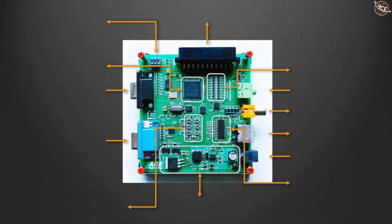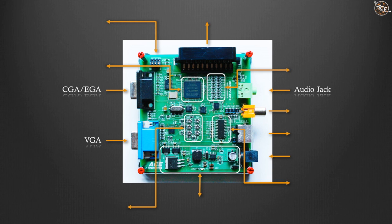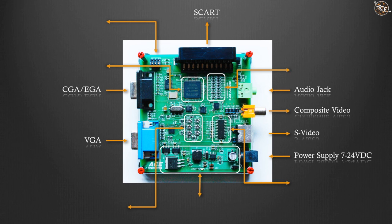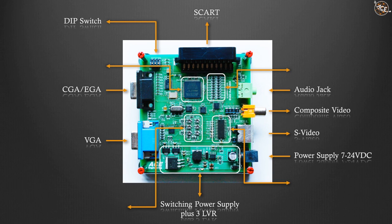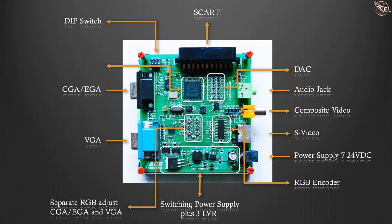CV2TV has a CGA/EGA connector input, VGA connector input, audio connector input, SCART connector output, composite video output, S-Video output, power supply connector, switching power supply with 3 linear voltage regulators to minimize ripple, DIP switch, independent RGB adjust for CGA, EGA, and VGA, RGB encoder, DAC, and FPGA.